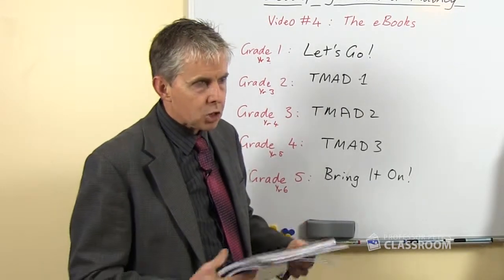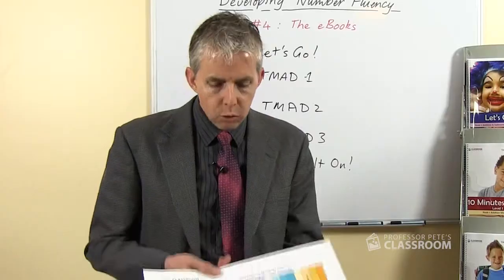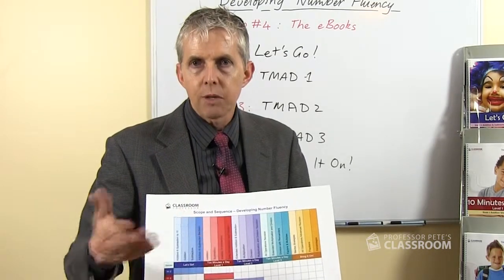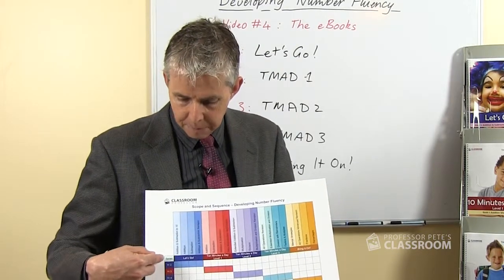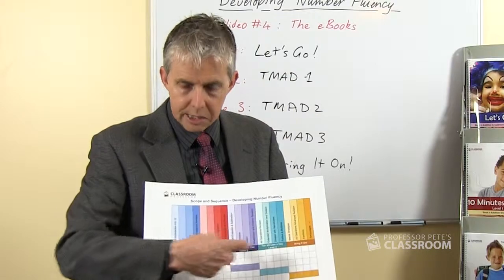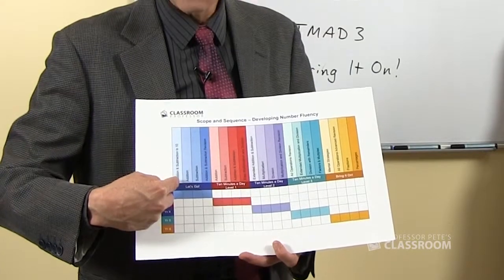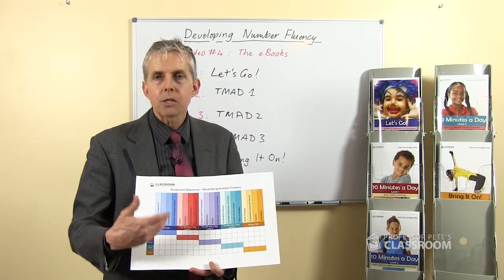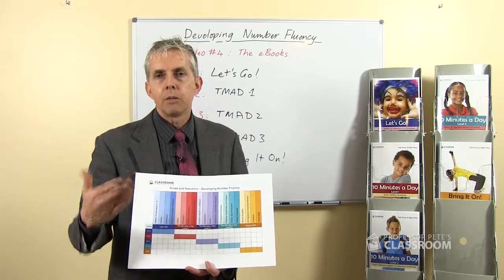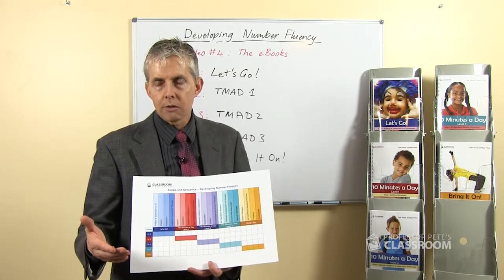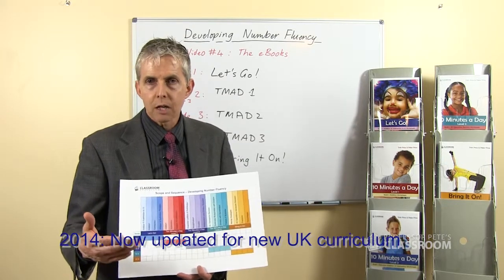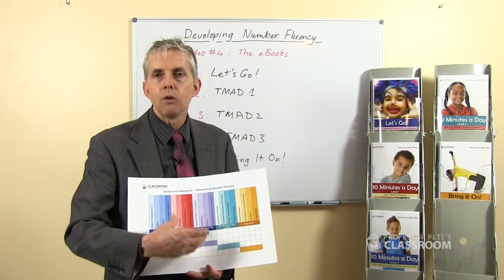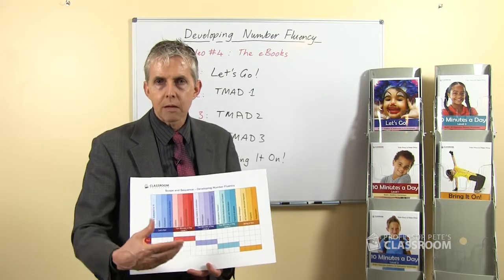Those topics have been picked because they match the curriculum. We've prepared a scope and sequence chart to show the progression from year level to year level, and this will be available on the website. We've checked out the Australian curriculum, the Common Core State Standards for math in the United States, and the new draft curriculum for the United Kingdom, and they're remarkably similar. So you can have confidence in choosing a year level or grade level set of books that it will match the curriculum recommended for those students.